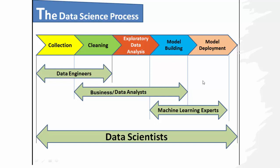The second stage of the data science process is the cleaning of data. Whenever we get data, it does not mean it is clean data. Sometimes we have to fill missing values, remove outliers, and do other things. For example, if a column has age values but people also wrote the word 'years' alongside the number, it becomes a character string. So we remove 'years' and keep the numbers only — that is one sort of cleaning process.